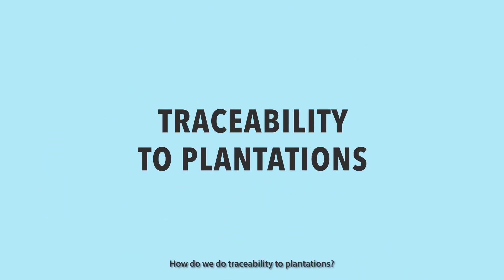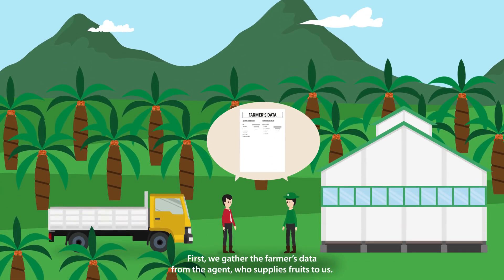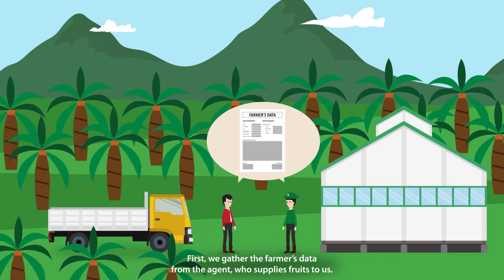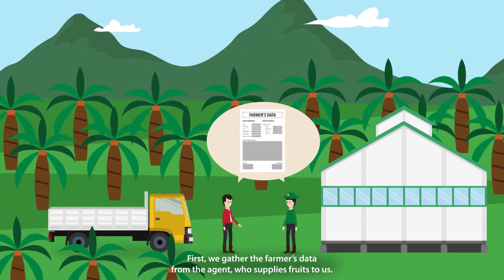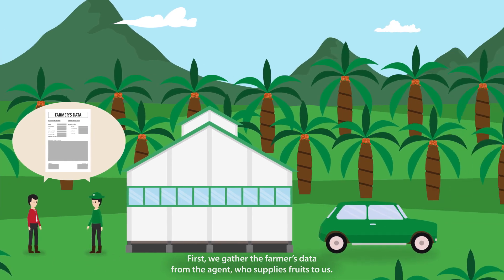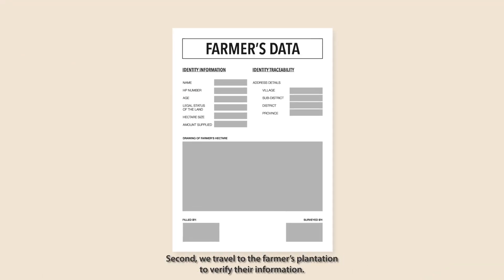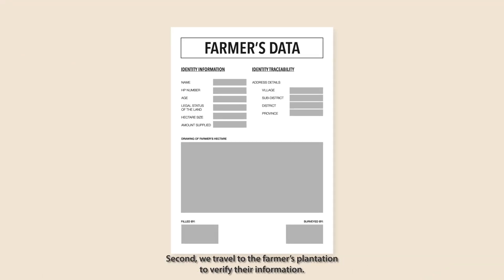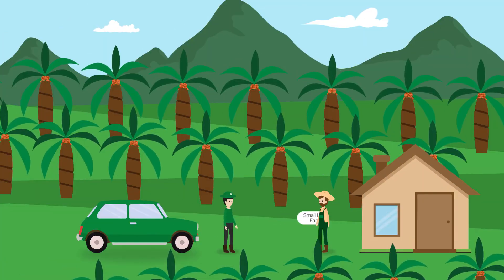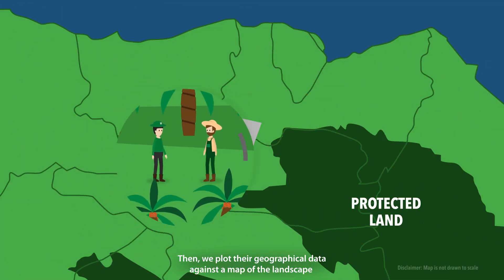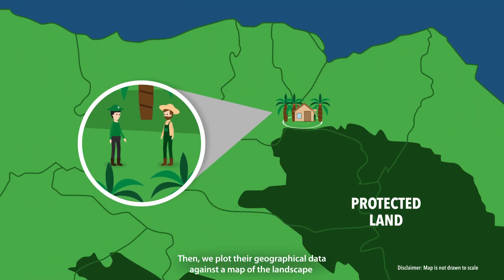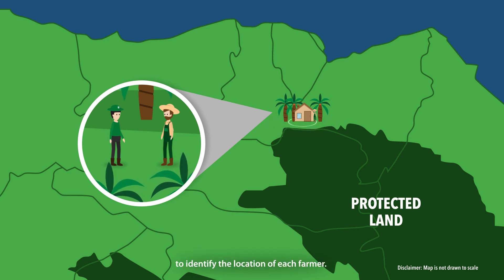How do we do traceability to plantations? First, we gather the farmers' data from the agent who supplies fruits to us. Second, we travel to the farmers' plantation to verify their information. Then we plot their geographical data against a map of the landscape to identify the location of each farmer.